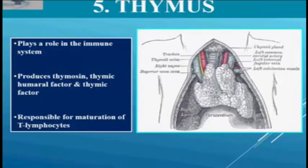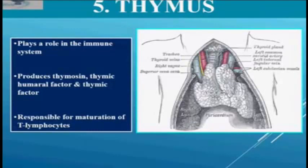The thymus gland is located in the neck above the heart. See, this is thymus. So that means it is located in the neck above the heart. The function of the thymus gland is to generate mature T lymphocytes. T lymphocytes means white blood cells that help the immune system fight off illness.